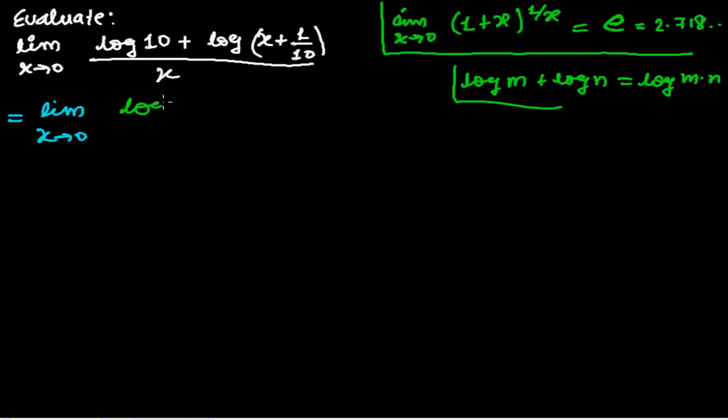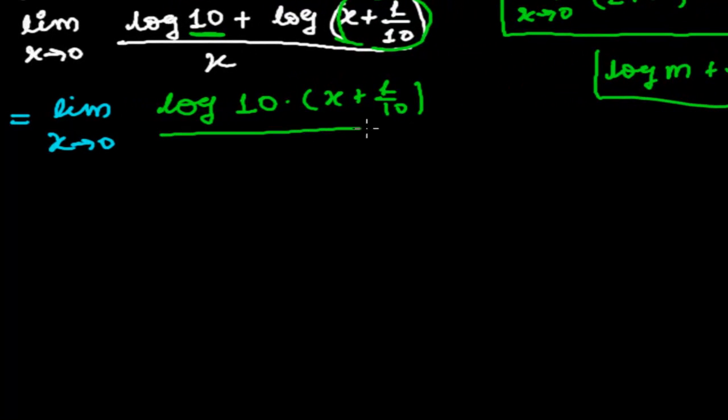So I'm using here log of 10, this 10 will work as m, and this x plus 1/10 as a whole, we can work as n. So log m times n, that is x plus 1/10, and then the whole divided by x.